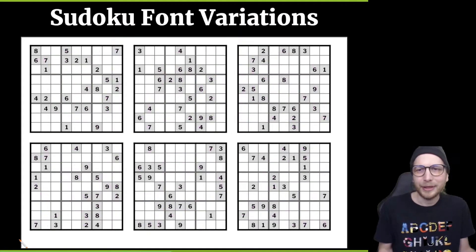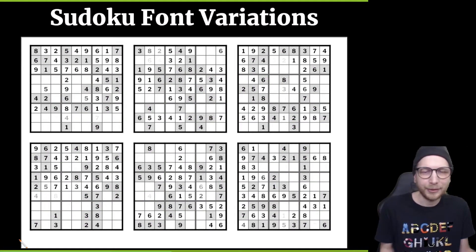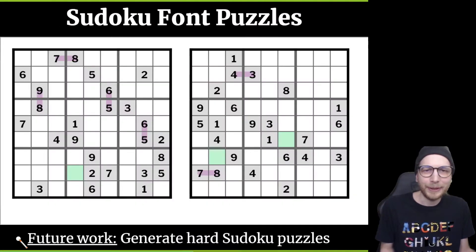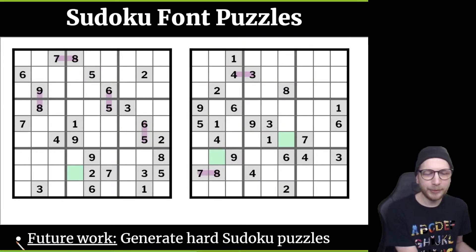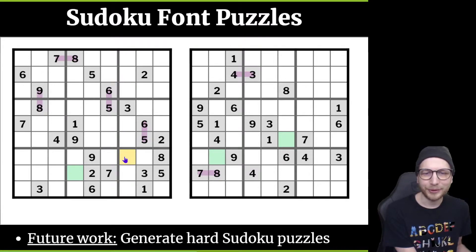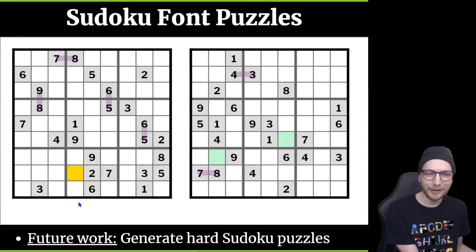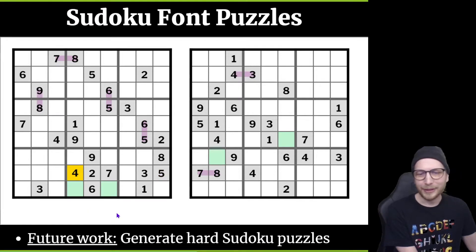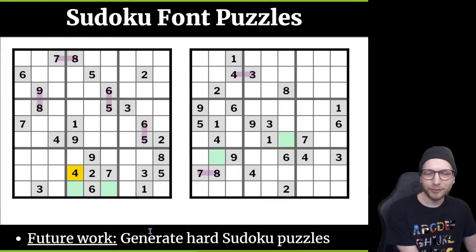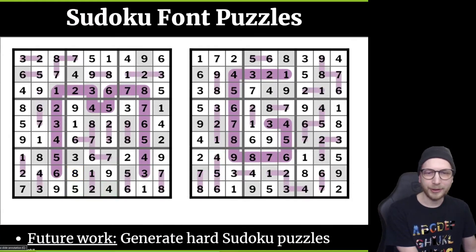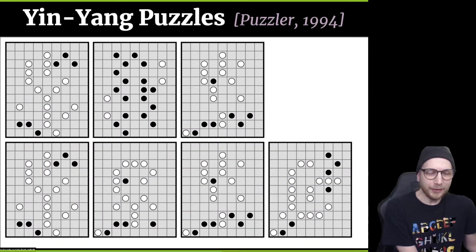We ended up with 81 different puzzles that each solve to a letter — 81 seemed like a nice number, nine by nine. If you play with these online, you get an interactive puzzle solver like you would on the New York Times. I've got hint mode turned on, so I can click on one of the green squares and figure out it's missing a four. Or if I make a mistake, it will highlight what I'm conflicting with. These puzzles are all easy to solve — you can just solve them one square at a time. It'd be fun to work on harder versions. This one solves to MG for Martin Gardner.